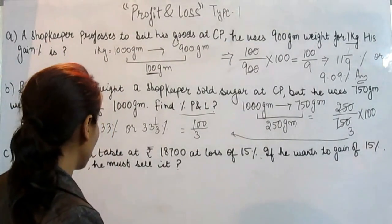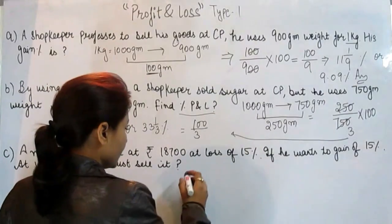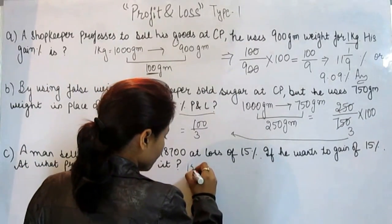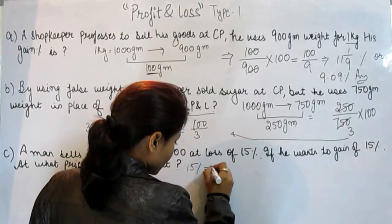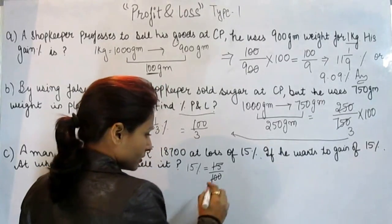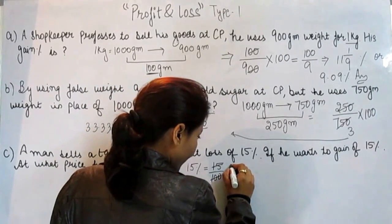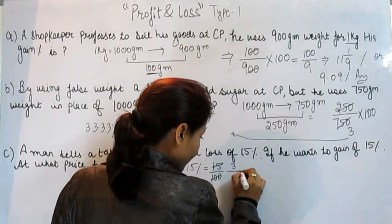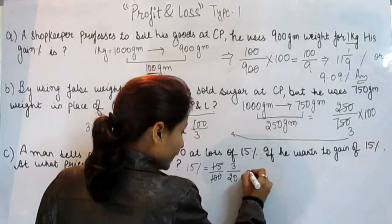A person is selling his table at 15% loss. So we can write 15% like this. When we divide by 5, we get 3 by 20.